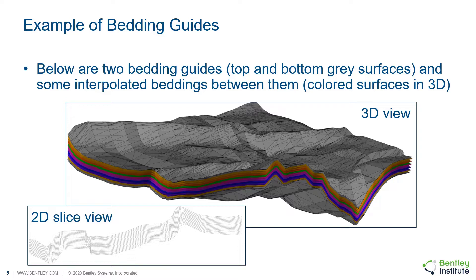Here's an example of a bedding guide. In this 3D view, we can see two gray surfaces — the top and the bottom surface — both of which can be represented as bedding guides. Between them, we can see several colored surfaces set in 3D. These colored surfaces are the interpolated beddings between the top and the bottom. If switching to the 2D slice view, we can have an idea of how these beddings will be represented as a folded rock in the model.